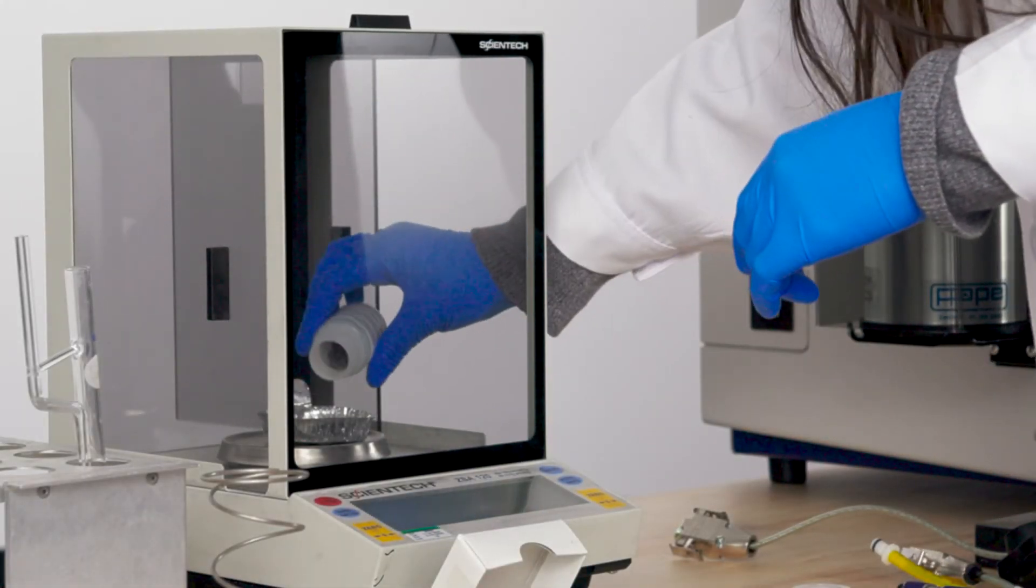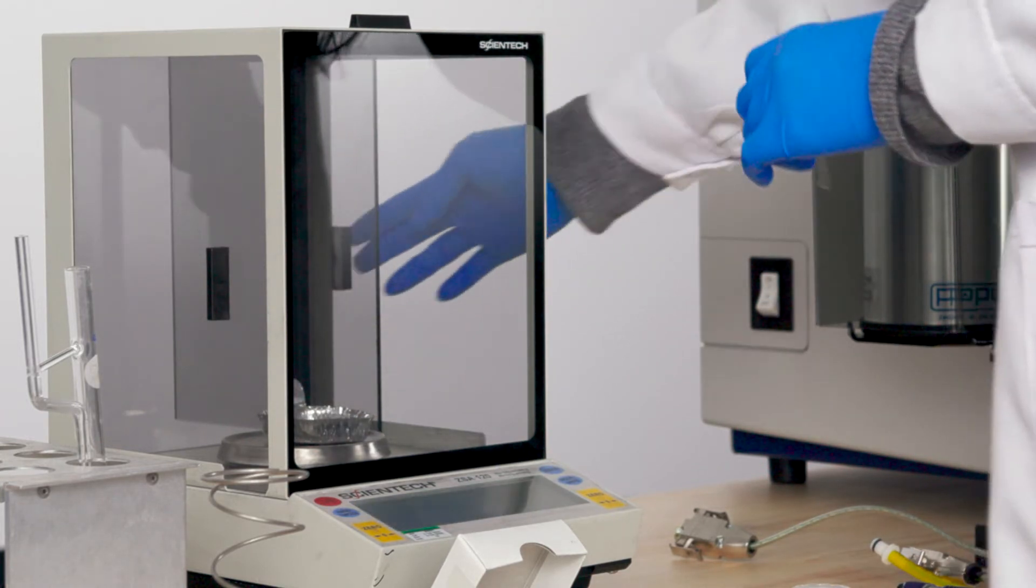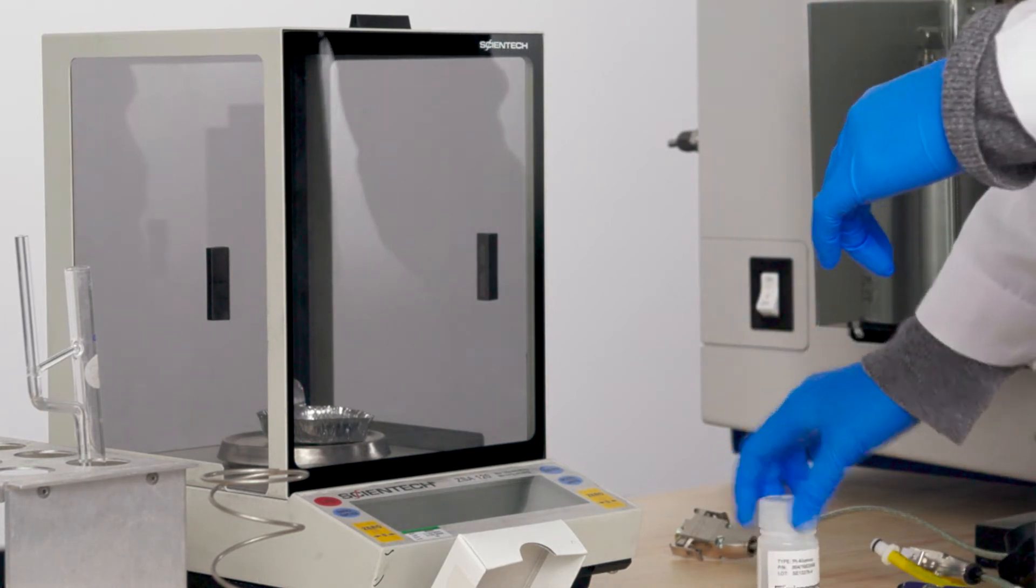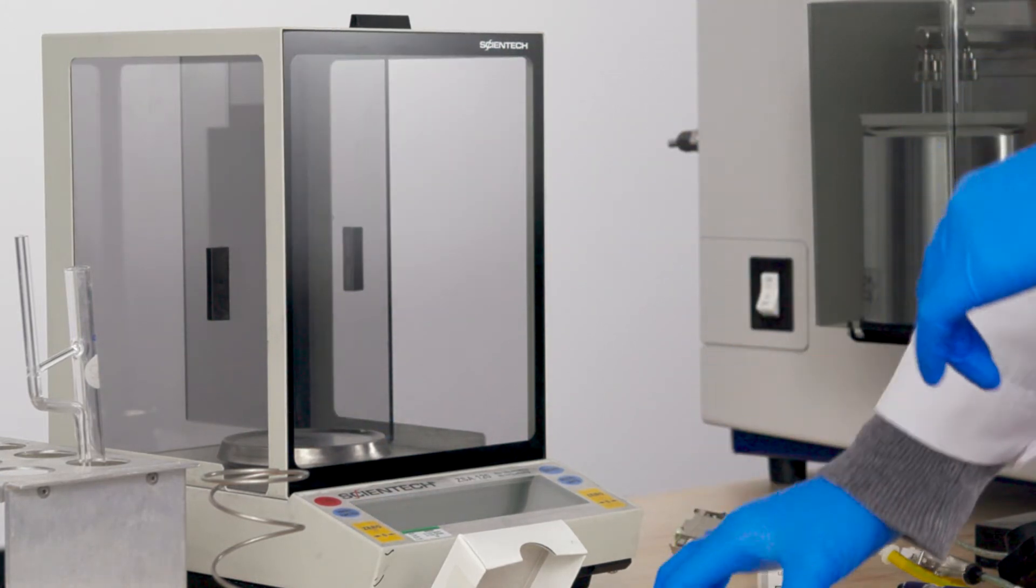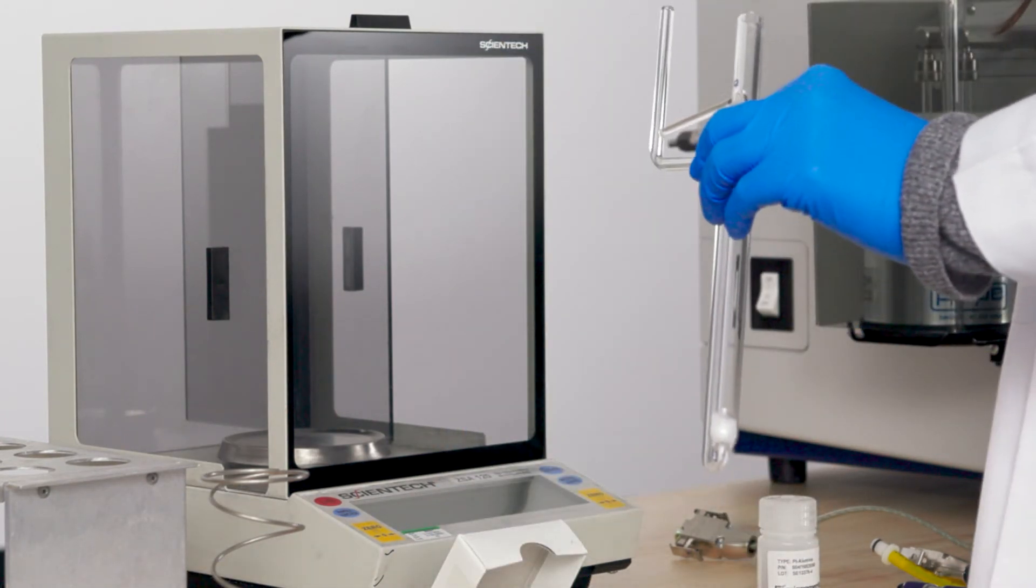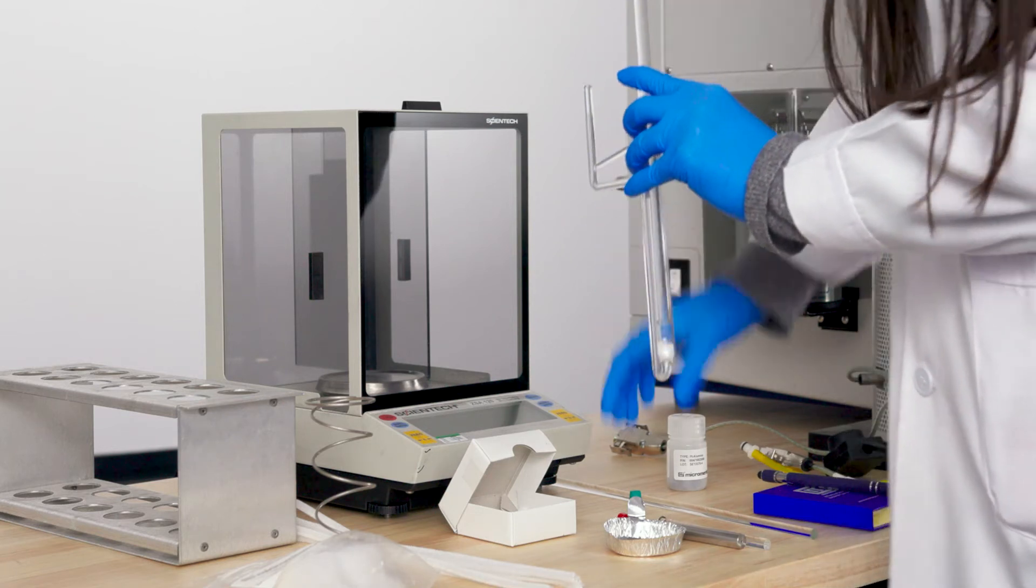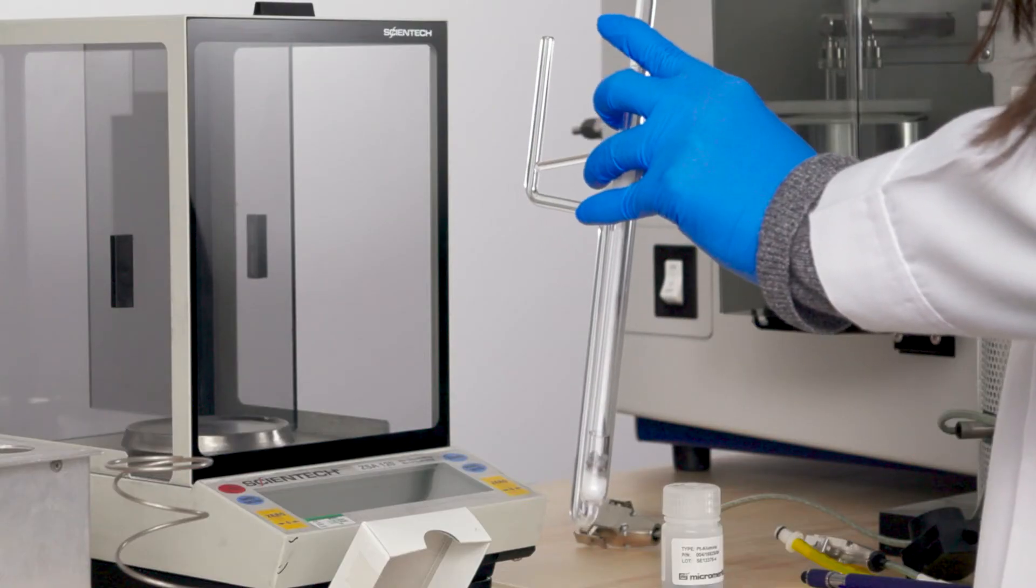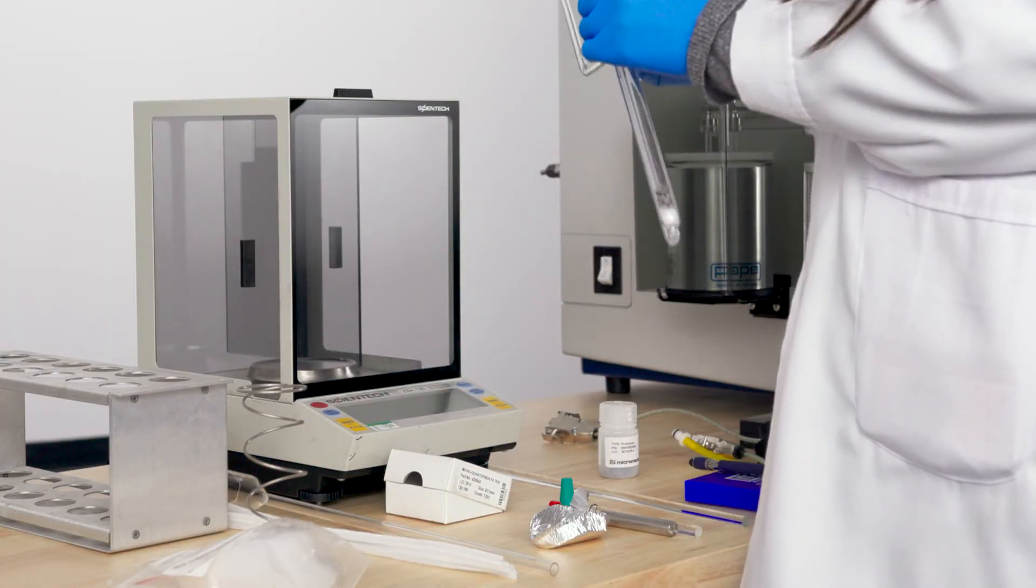Weigh and load the sample into the sample tube. A funnel is recommended for powdered samples. Do not fill the sample past the hot zone. A pipe cleaner can be used to clean the walls within the tube.